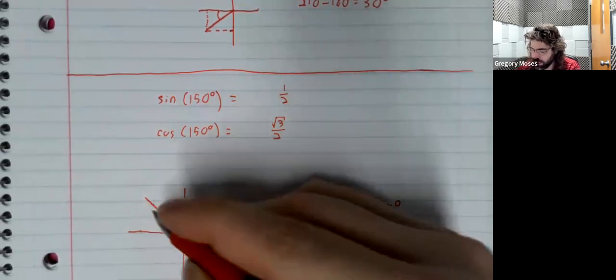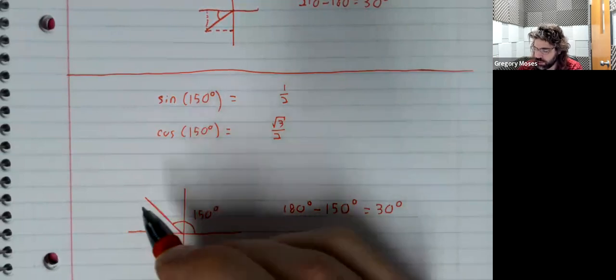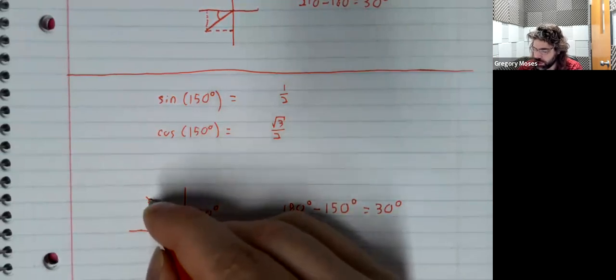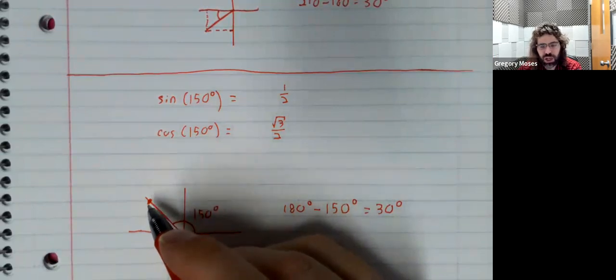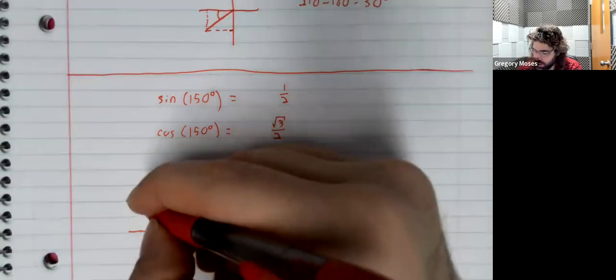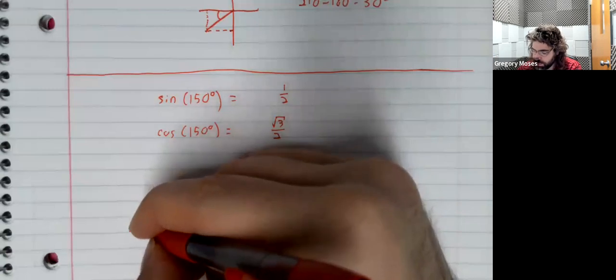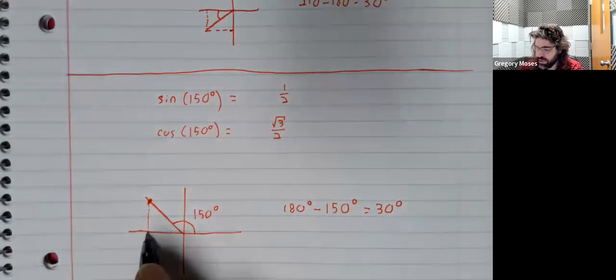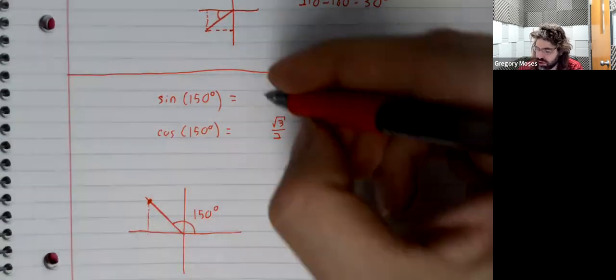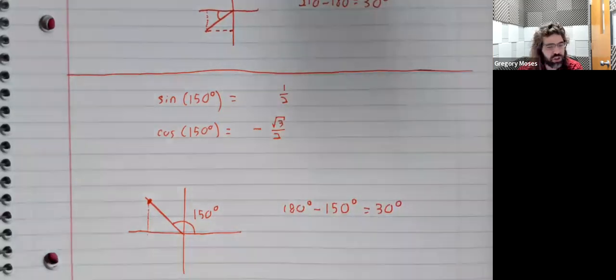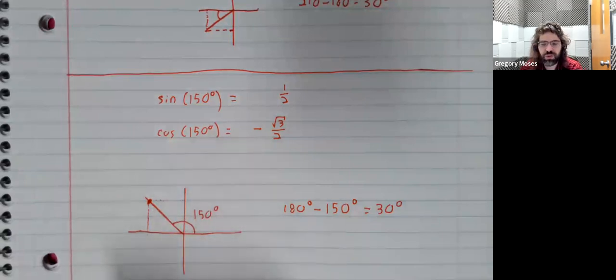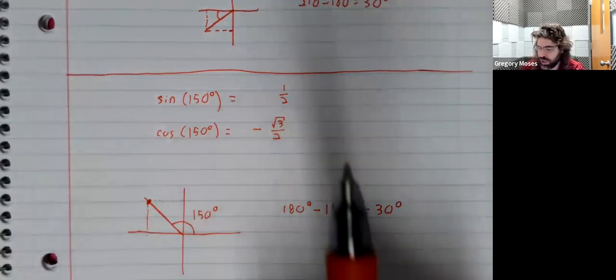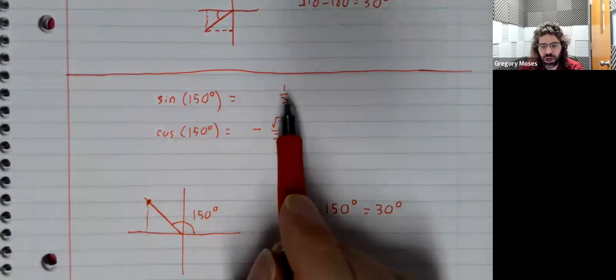But now we think, the sine and cosine are the x and y coordinates of a point on the unit circle. A point in the second quadrant has a negative x coordinate. So the cosine should be negative. But it has a positive y coordinate. So the sine should be positive.